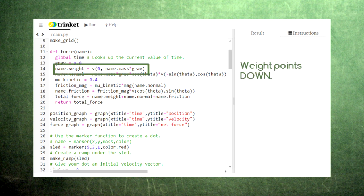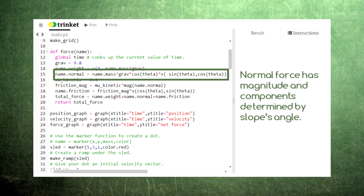Here we have the weight vector. Notice that it's pointing directly downward. Next, we calculate the normal force. It has a magnitude given by the weight times the cosine of the slope's angle, and its components are determined by the negative sine and the cosine of the slope's angle.